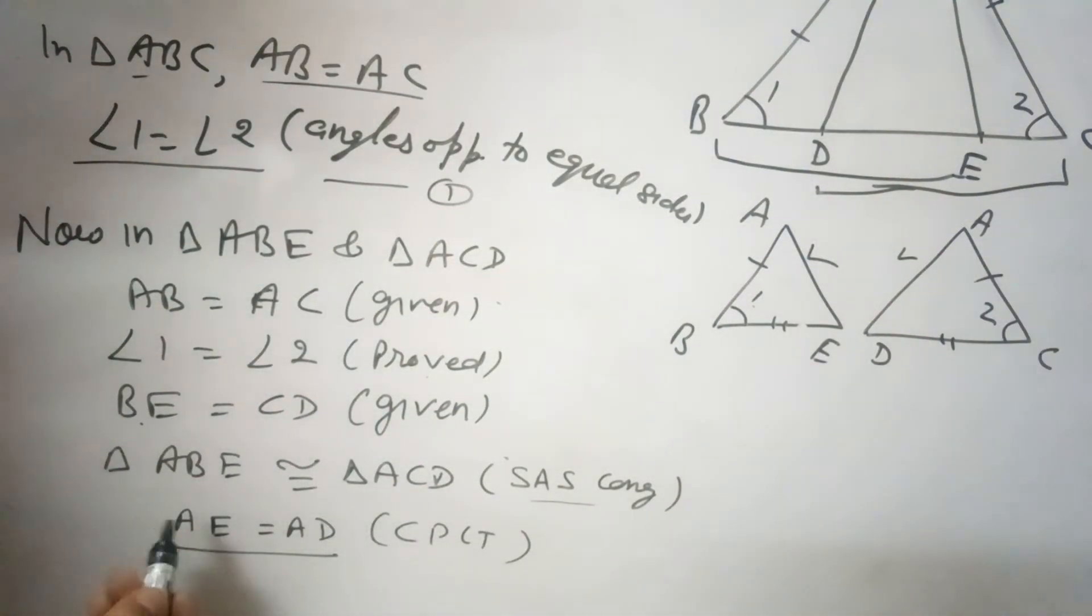Therefore, from here, AE equals AD by CPCT, and this is the result.